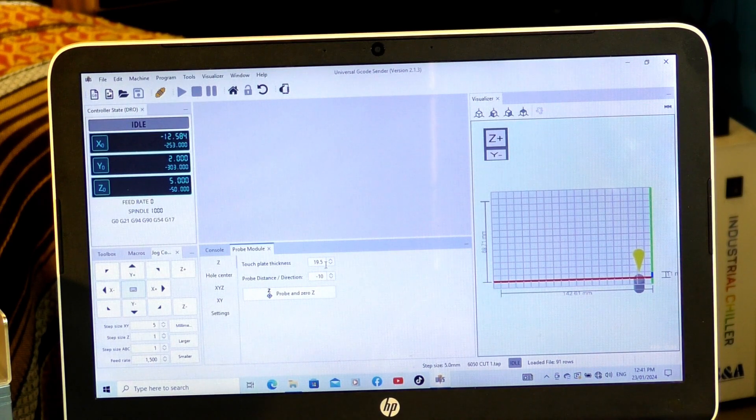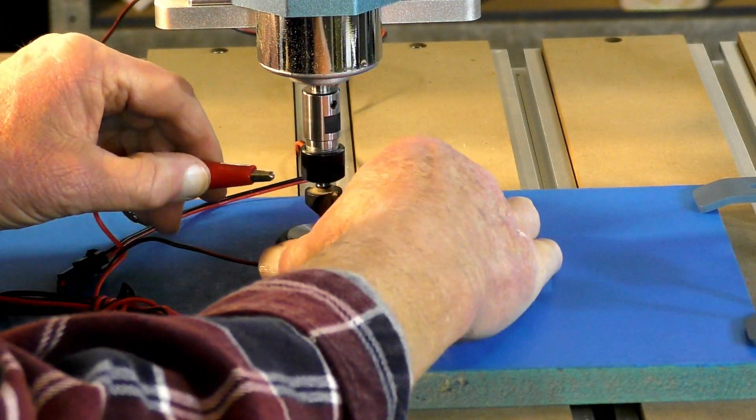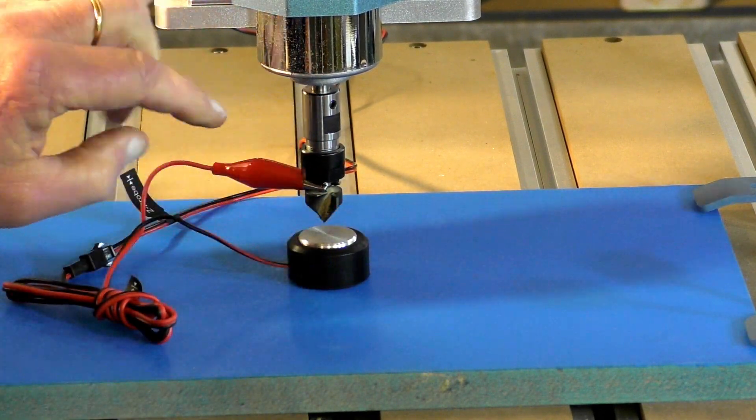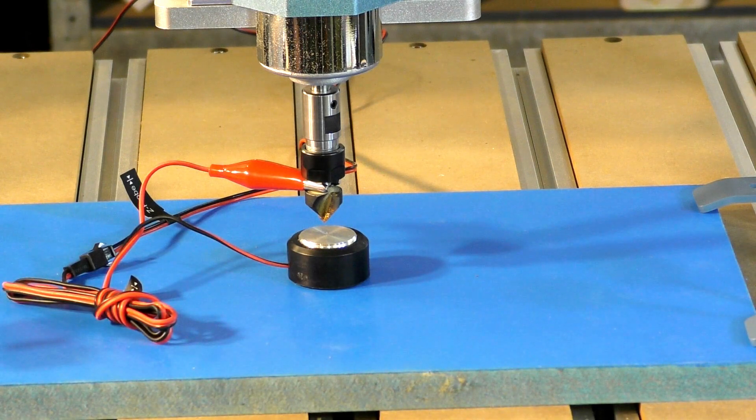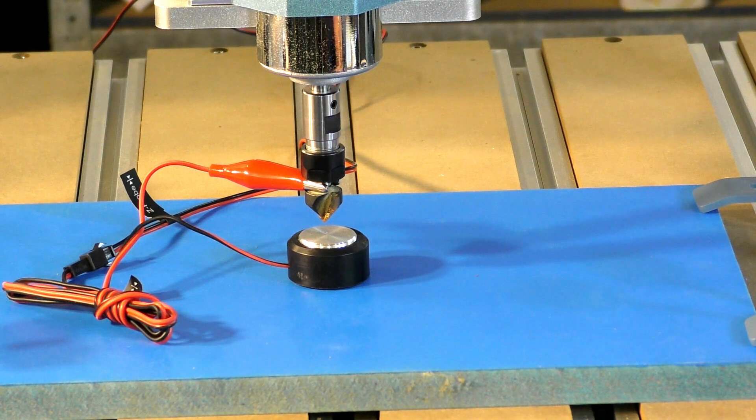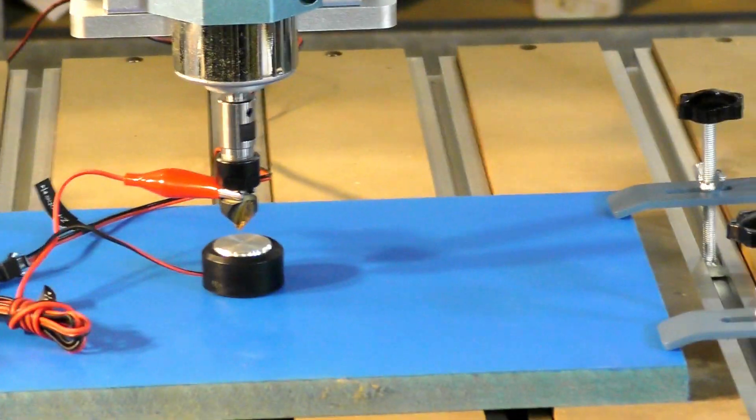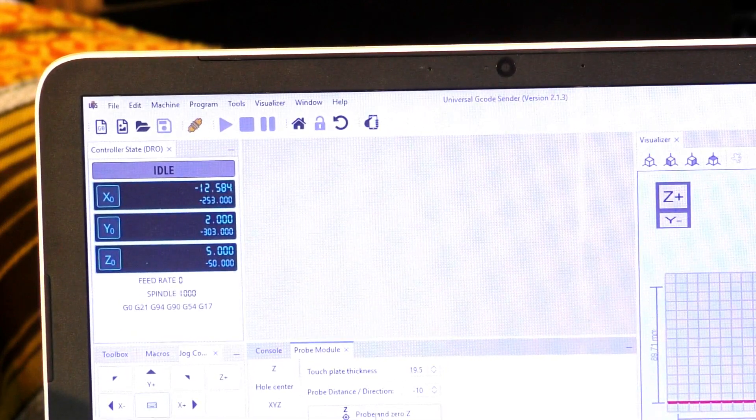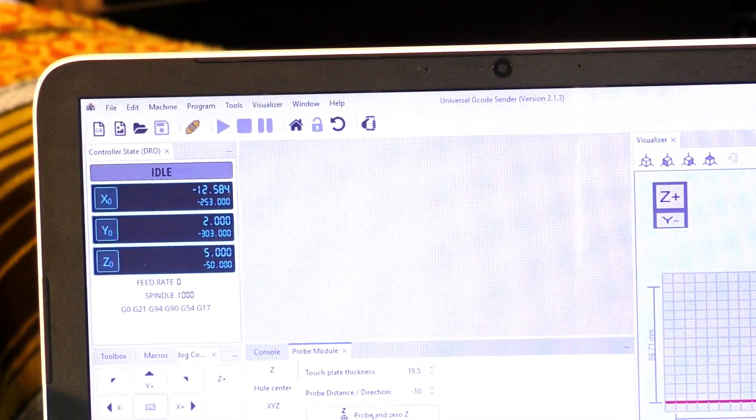So we will now zero the Z. Put your puck underneath the tool and put your crocodile clip on the shaft of your tool. If you don't put this on, this won't stop until the motor stalls. So now I'm going to ask UGS to automatically look for the Z. What I'm going to be doing is just pressing this here, and that will start off the probing function. Here we go. And there you go.